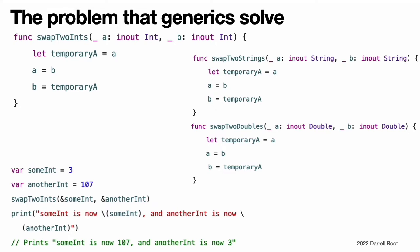If you want to swap two string values or two double values, you have to write more functions, such as the swapToStrings and swapToDoubles functions shown here. You may have noticed that the bodies of swapToInts, swapToStrings, and swapToDoubles functions are identical. The only difference is the type of the values that they accept: int, string, and double. It is more useful and considerably more flexible to write a single function that swaps two values of any type. Generic code enables you to write such a function.